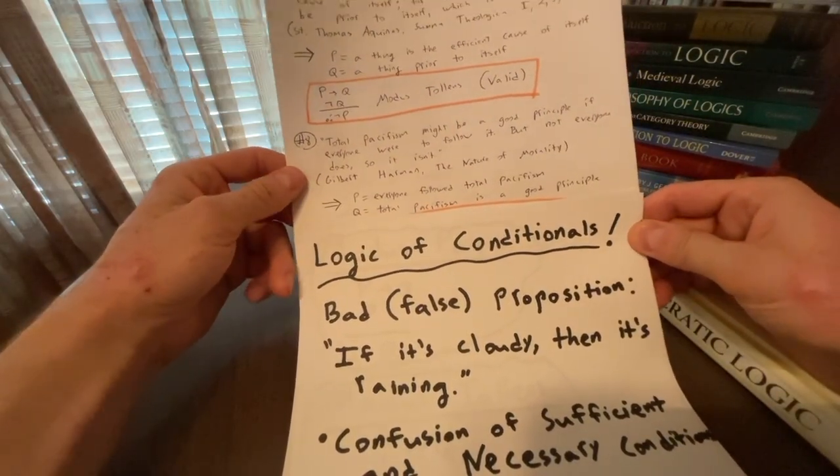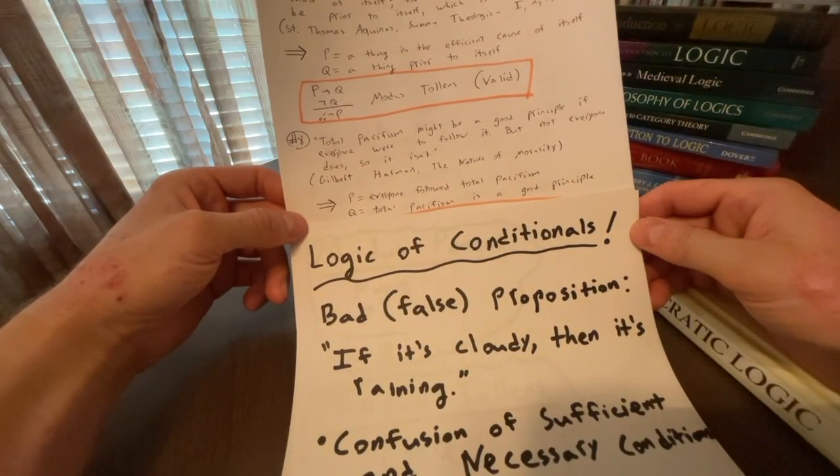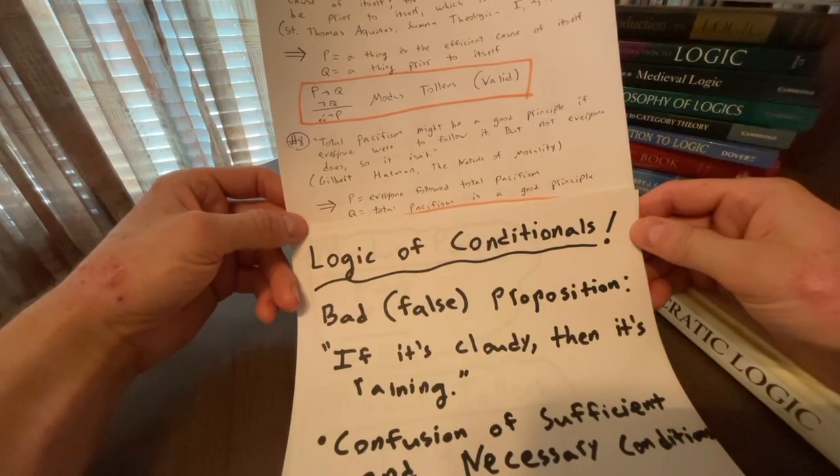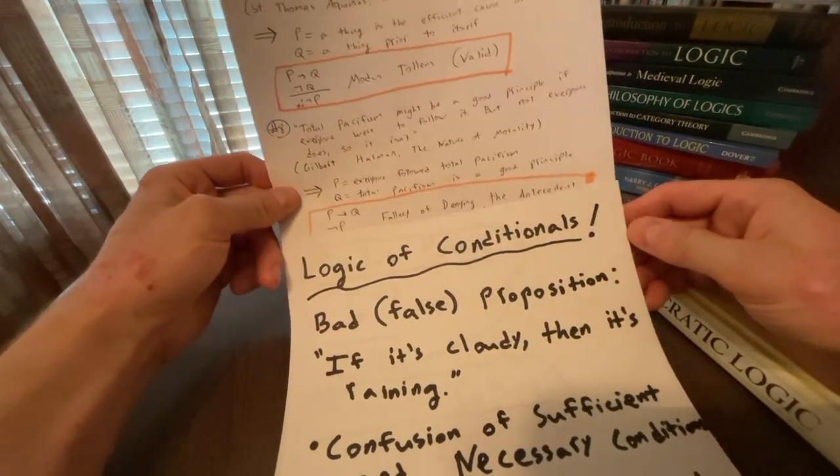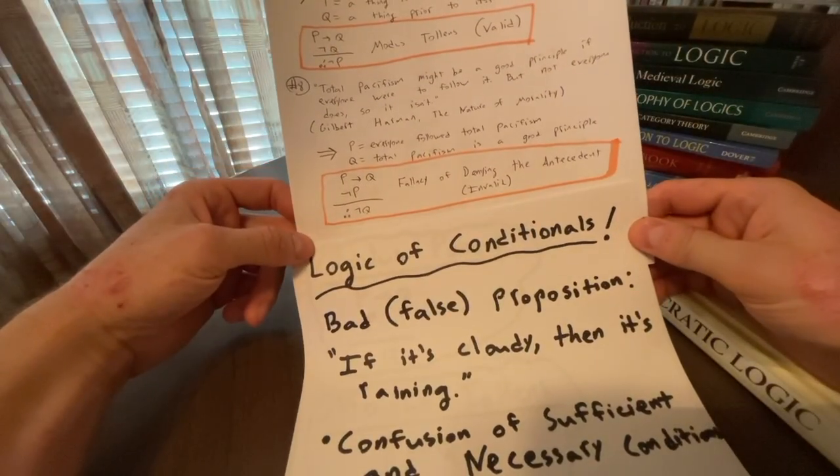So we might say that P represents something and Q represents something. So P will say represents everyone followed total pacifism, and then Q represents total pacifism is a good principle. So we have the P, we have the Q, and we have this argument, if P, then Q, not P, therefore not Q.